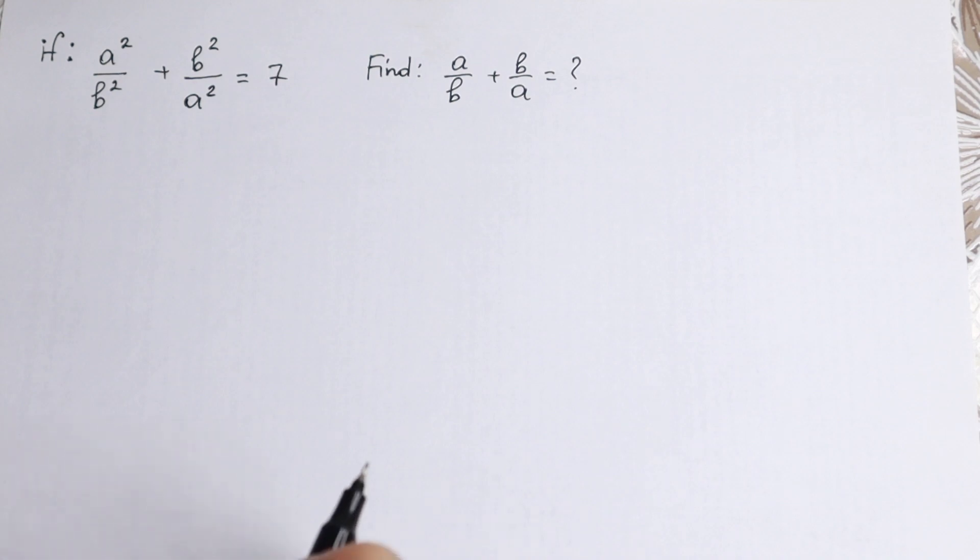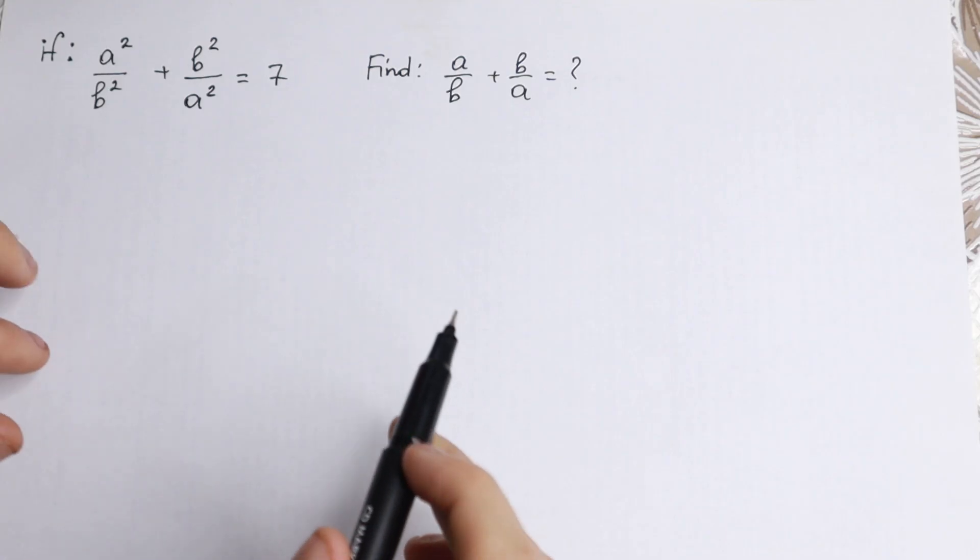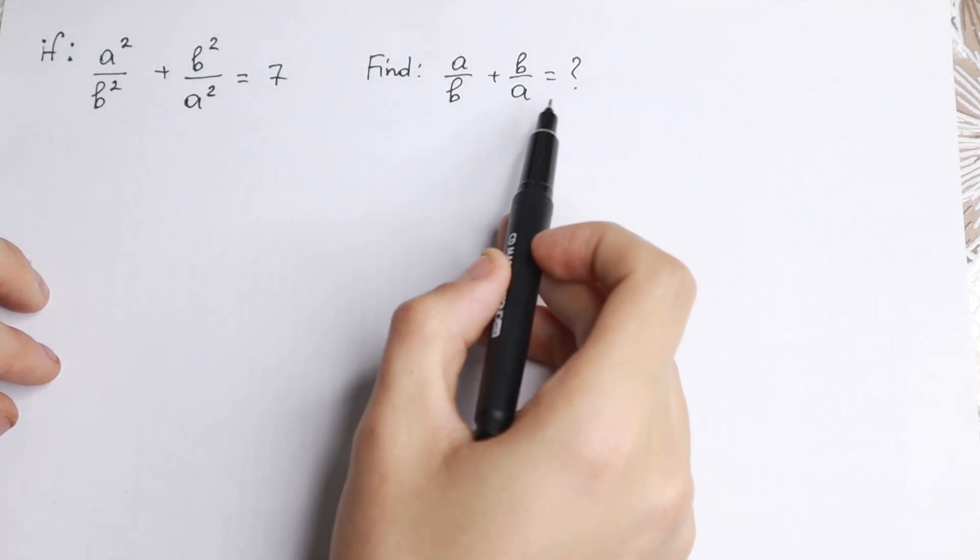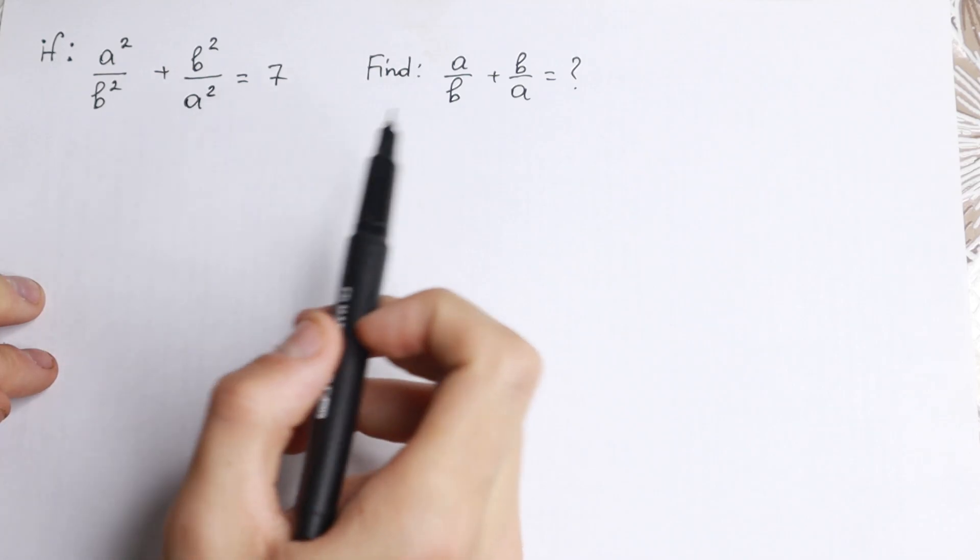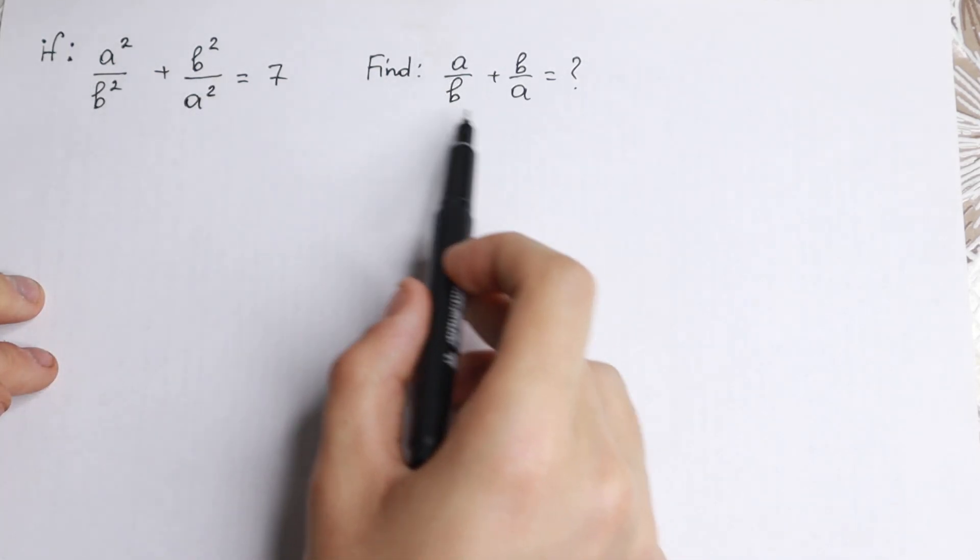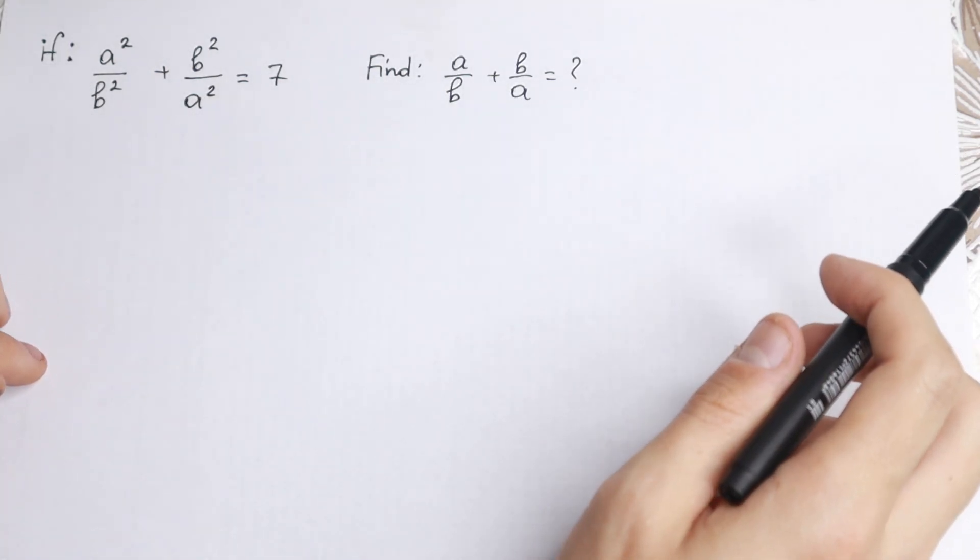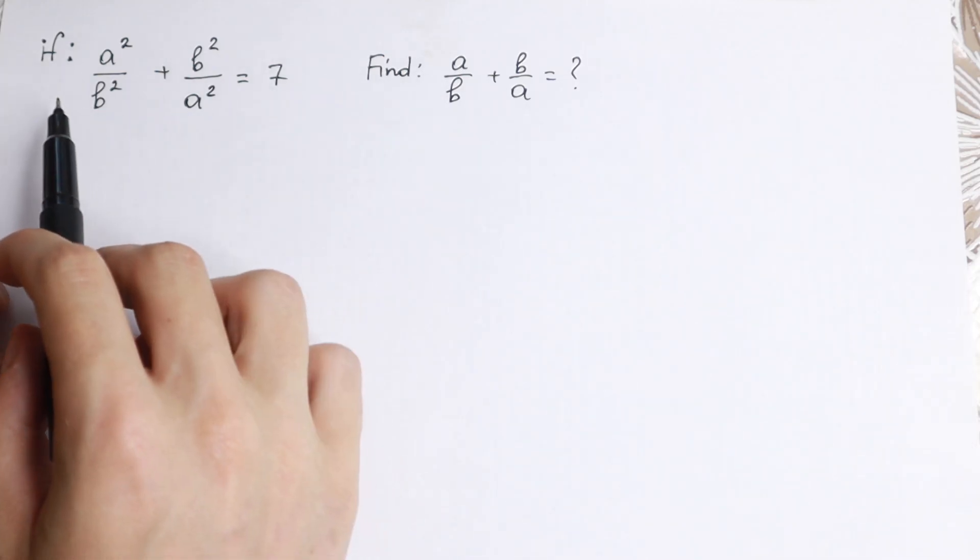Hello everyone, welcome back to High Mathematics. Happy to see you here. Really interesting algebra problem today. We need to find this expression, but we have this expression equal to 7. We have squares right here, we don't have squares, and we need to find this answer. On the first side, it looks like we take square root from both sides.